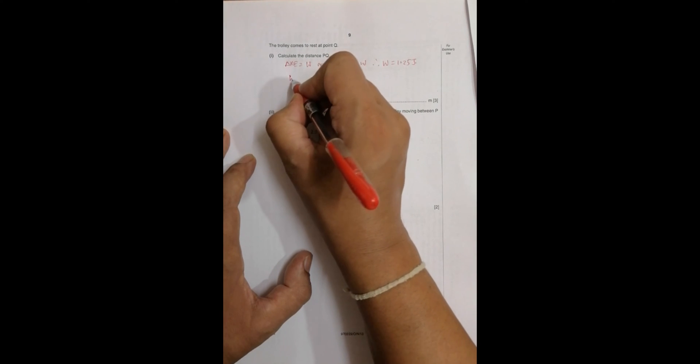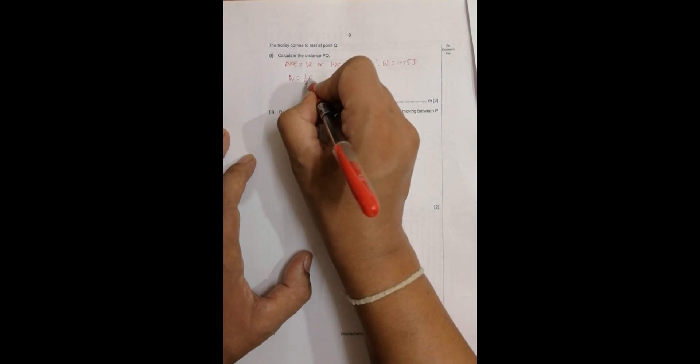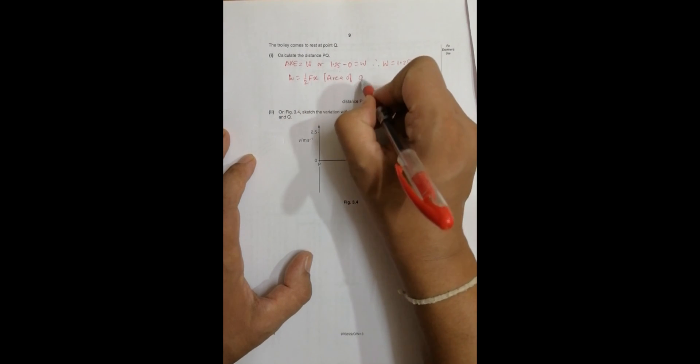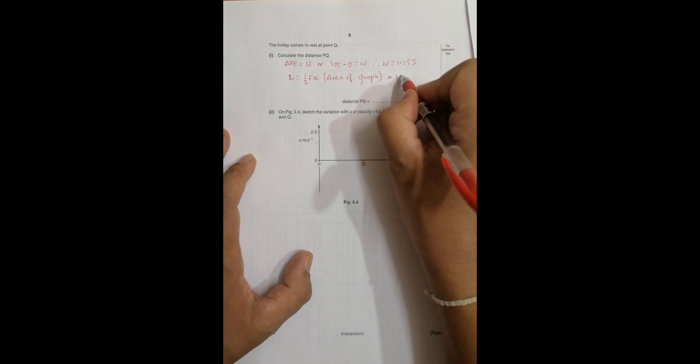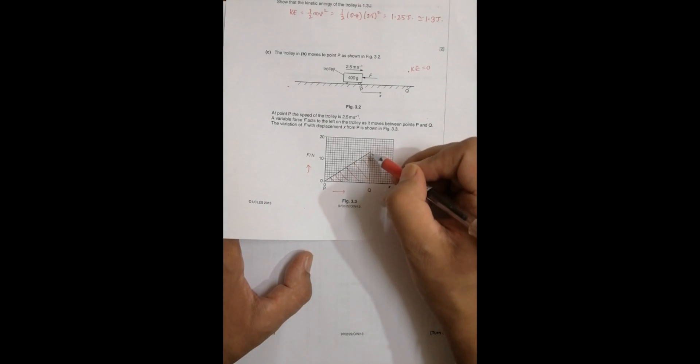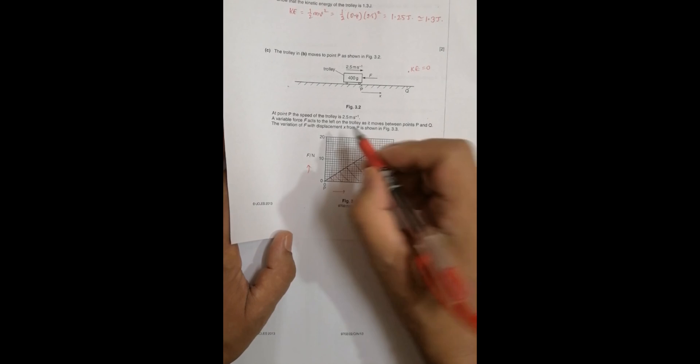So W equals 1/2 F times x, the area of the graph. This gives us 1.25 equals 1/2 times...